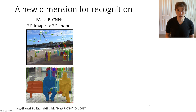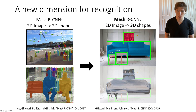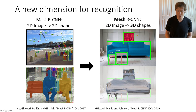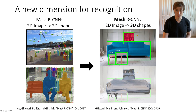We're all familiar with the mask RCNN system, which can make very precise localizations of the 2D shapes of objects in images. Last year, myself and colleagues at Facebook published Mesh RCNN, which takes a single 2D image and can recognize not just the two-dimensional shapes of objects, but also the three-dimensional shapes represented by triangle meshes. We believe that this third spatial dimension is an important next frontier for computer vision.